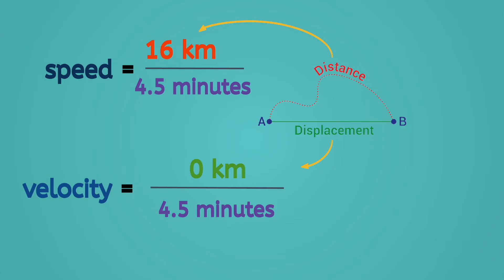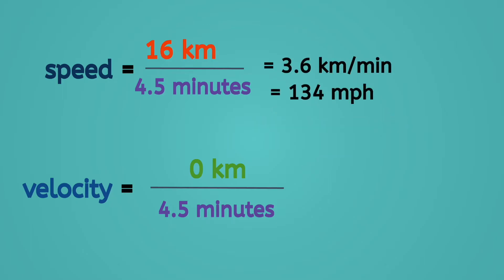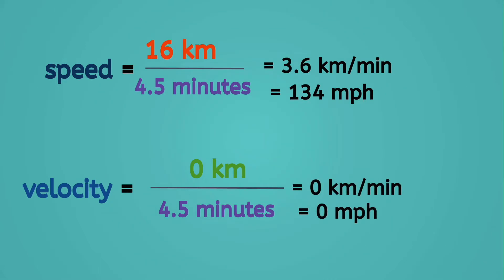Let's see how these numbers work out for speed and velocity. If after 4 and a half minutes our car has completed 16 kilometers, it has a speed of 134 miles per hour. But if it is currently back at the position of the track where it started, its displacement, and therefore velocity, is zero. So in this case, speed is a much better measure of what motion is actually occurring.